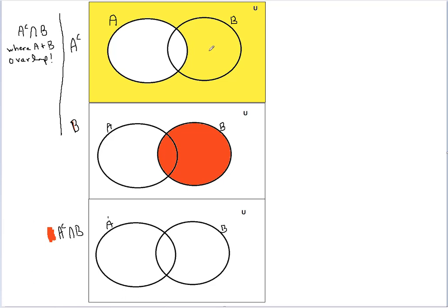So we have here yellow, we have here red, and so what I'm going to do is I'm going to shade this in orange. And that is my solution for A complement intersect B.